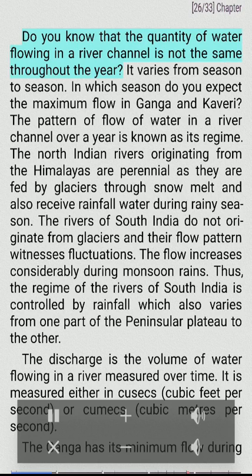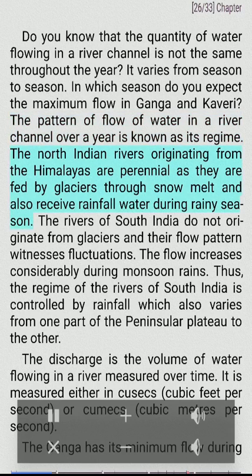The quantity of water flowing in a river channel is not the same throughout the year — it varies from season to season. The pattern of flow of water in a river channel over a year is known as its regime. The north Indian rivers originating from the Himalayas are perennial, as they are fed by glaciers through snowmelt and also receive rainfall during the rainy season. The rivers of south India do not originate from glaciers, and their flow pattern witnesses fluctuations, controlled mainly by rainfall.